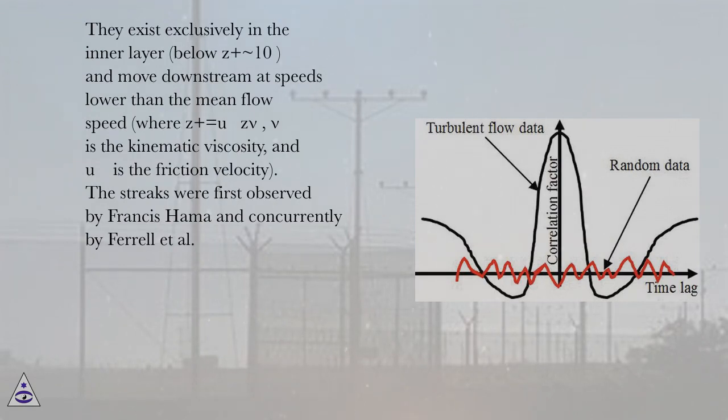where z+ = U*z/ν, ν is the kinematic viscosity, and U* is the friction velocity. The streaks were first observed by Francis Hama and concurrently by Ferrell et al.